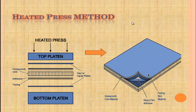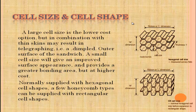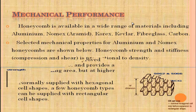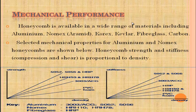Cell size and cell shape: a large cell size is the lower cost option, but a small cell size gives improved surface appearance and provides a greater bonding area at higher cost. Normally supplied with hexagonal cell shapes, though some honeycomb types can be supplied with rectangular cell shapes. Honeycomb is available in a wide range of materials including aluminum, Nomex, Kevlar, fiberglass, and carbon. Honeycomb strength and stiffness is proportional to density.